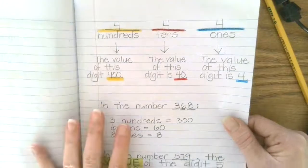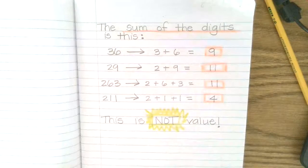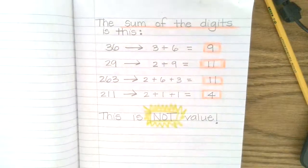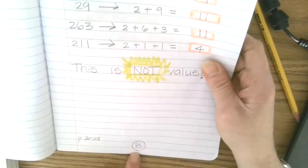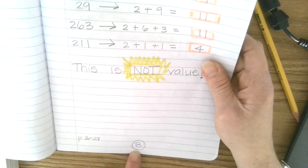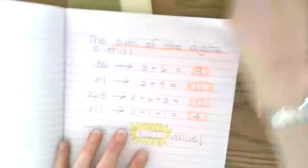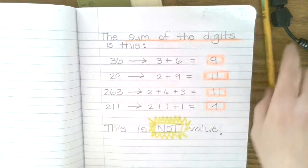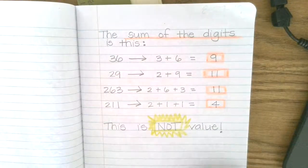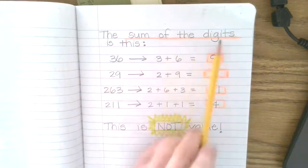Now, the next page that you need to do in your math journal, just turn one page, is page eight. So put a number eight at the bottom of your page. And this talks about the sum of the digits.